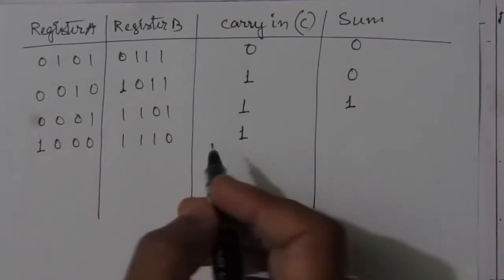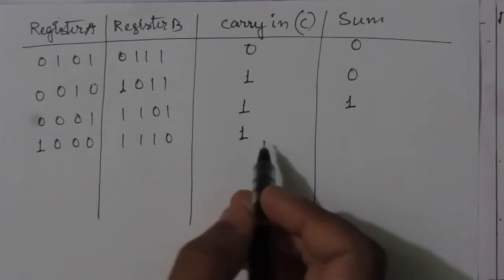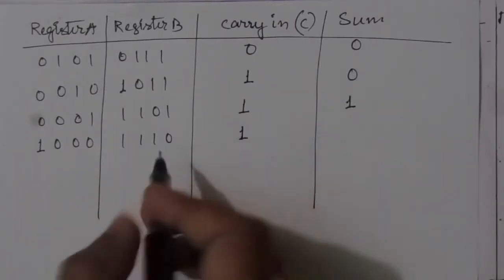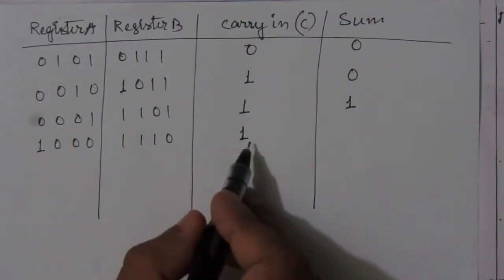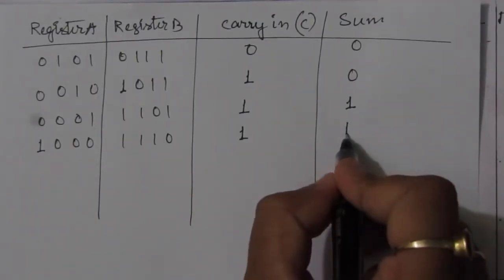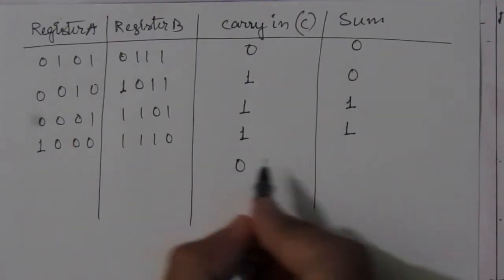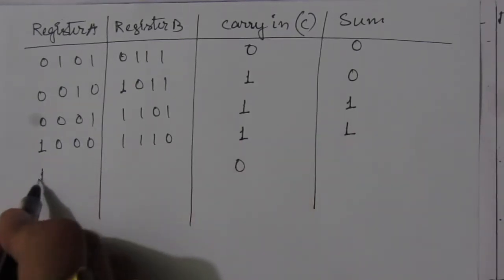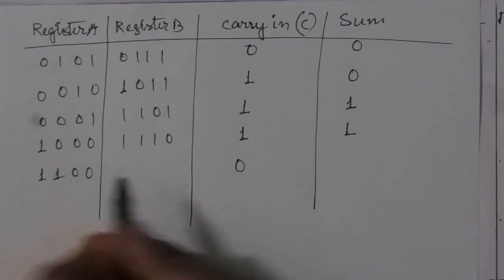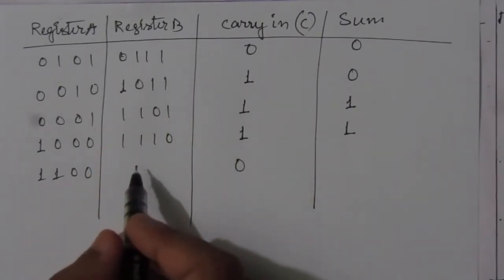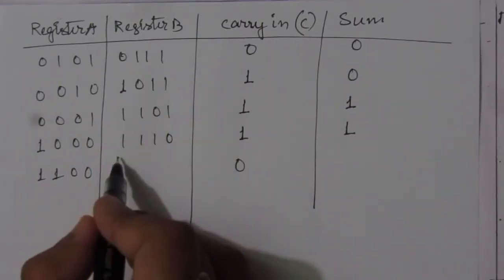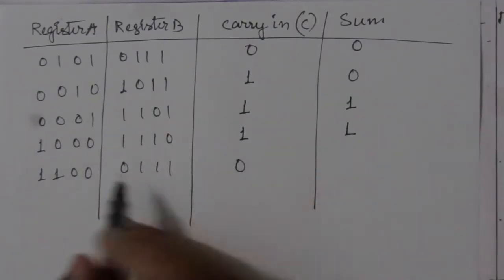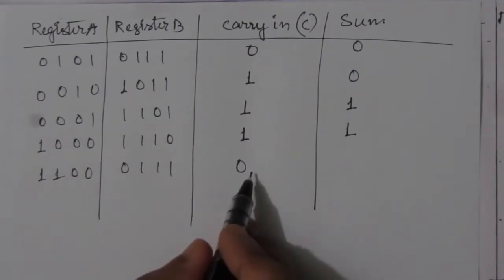For the fourth clock cycle: 0 + 0 + 1 gives sum = 1 and carry = 0. The content of register A becomes 1100, and for register B the 0 feeds back giving 0111. The sum 0 + 1 + 0 = 1 with carry = 0.